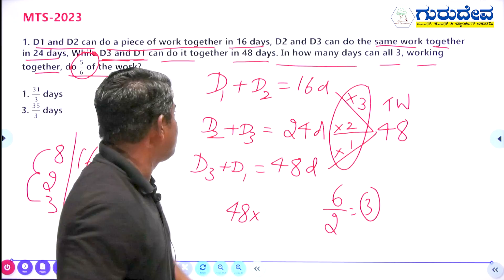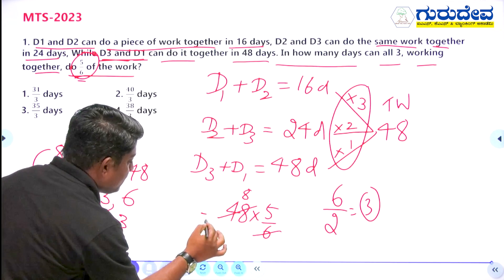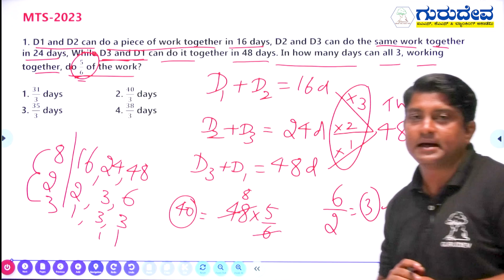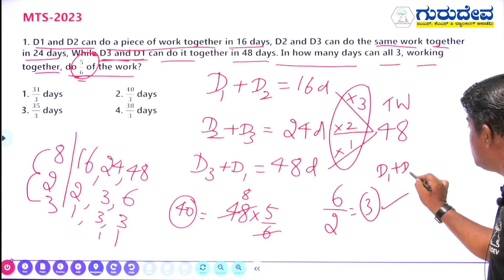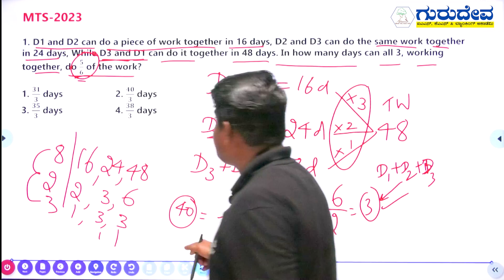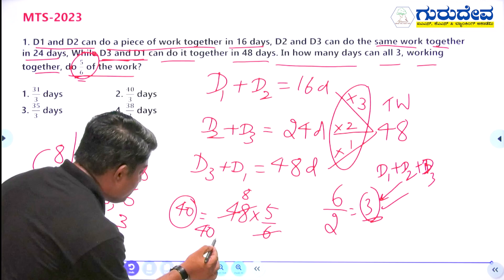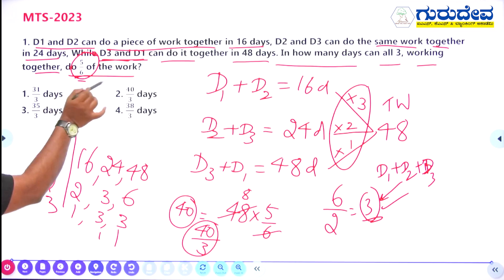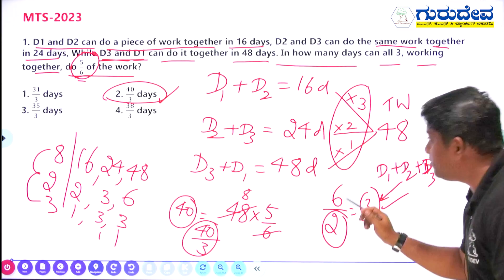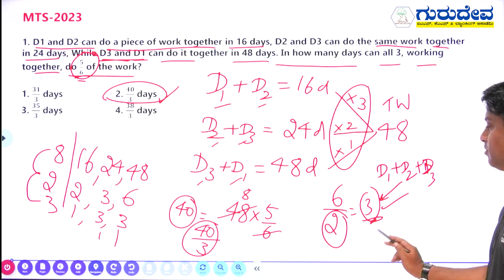5/6 of the total work = (5/6) × 48 = 40 units of work. The combined efficiency of D1+D2+D3 is 3 units per day. So the time required = 40 ÷ 3. That is why we divided the total efficiency by 2 — because each person appeared twice — giving option 4 as the right answer.